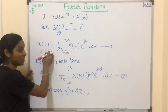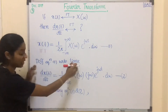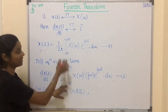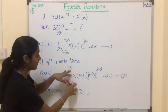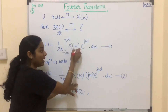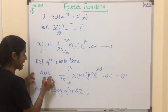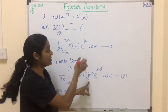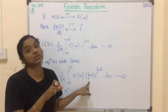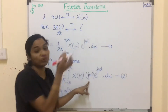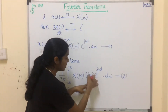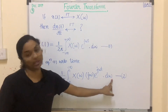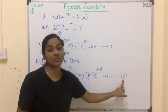If we differentiate equation number 1 with respect to time, that is dx(t)/dt, we get: 1/2π is a constant and the integration remains the same — integral from minus infinity to infinity. X(ω) is a constant with respect to time, so X(ω) remains the same. The term e^(jωt) depends on time, so differentiating it gives jω · e^(jωt) dω. I am marking this as equation number 2.